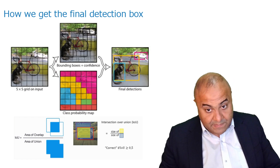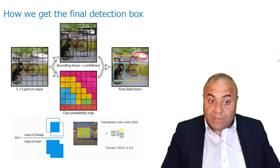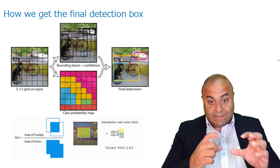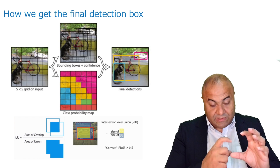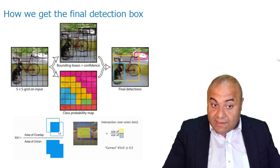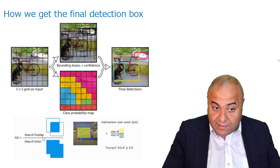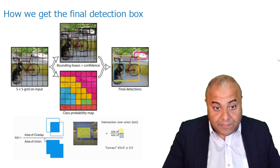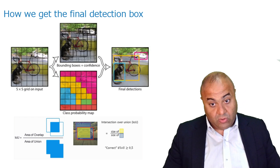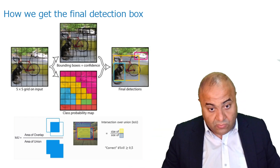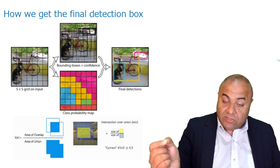Before explaining how to reduce the boxes, let's talk about Intersection over Union (IoU). We take two bounding boxes and overlap them. We can calculate the intersection area and the union area. Dividing the intersection area by the union area gives us the IoU score. This is how we measure how similar one bounding box is to another.